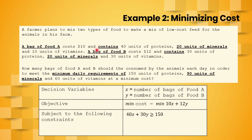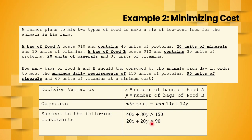A bag of food A contains 20 units of minerals and a bag of food B also contains 20 units of minerals. We want the mix of food A and food B to meet the minimum daily requirement of 90 units of minerals. With x bags of food A and y bags of food B, the total minerals is 20x + 20y, and this must satisfy 20x + 20y ≥ 90.